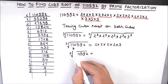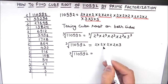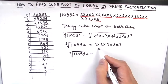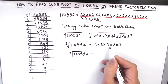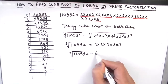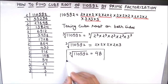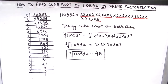So the cube root of this number is equal to 2 times 2 times 2 times 2 times 3. That is: 2 times 2 is 4, 4 times 2 is 8, 8 times 2 is 16, and 16 times 3 is 48. So the cube root of 1,10,592 is 48. This is how you can find the cube root of any number using the prime factorization method. I hope this video is helpful. If you like the video, please hit the like button and subscribe to my channel for more math videos. Thanks for watching.